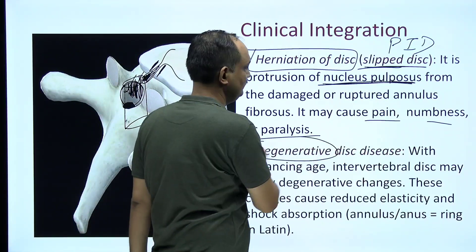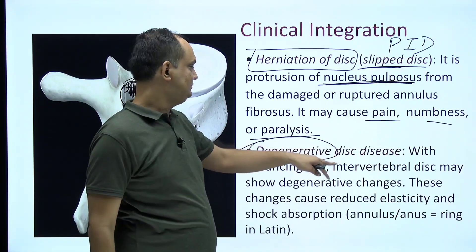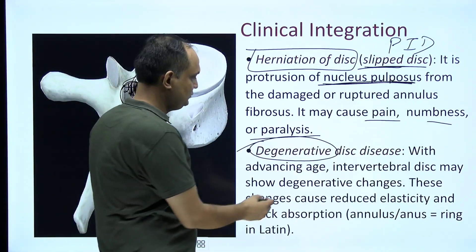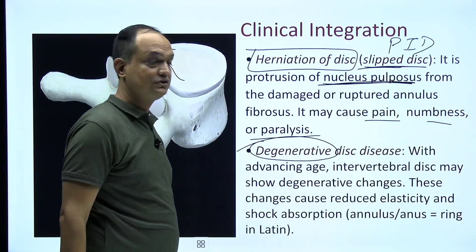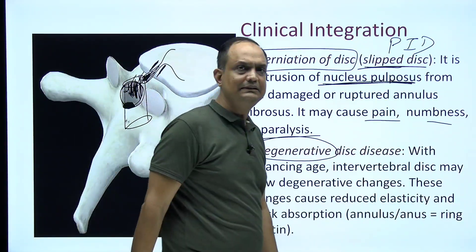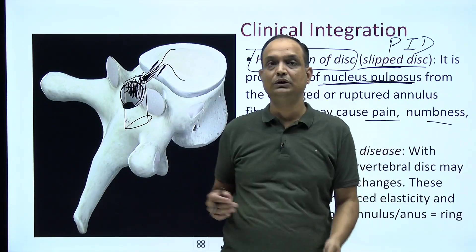The second clinical aspect is degeneration of the disc. With advancing age, the disc may show degenerative changes that reduce elasticity and shock absorption. For exam purposes: the intervertebral disc is a secondary cartilaginous joint, and there are 23 intervertebral discs in the vertebral column, because discs are absent between all vertebrae — specifically above C2 and within the sacrum and coccyx.